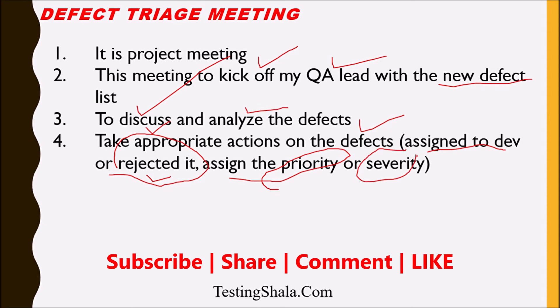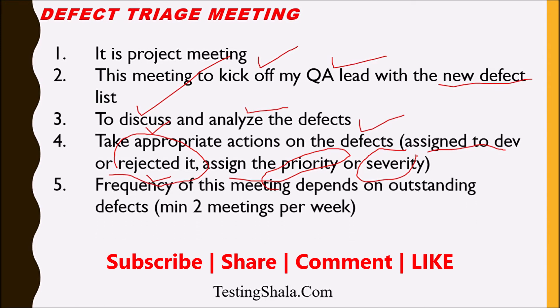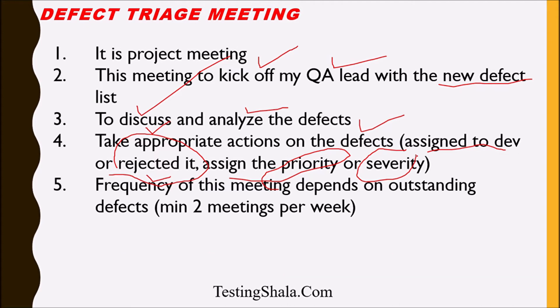The frequency of this meeting depends on the outstanding defects. If you have a large pile of outstanding defects, you would likely have daily or alternate-day triage meetings per week. If you have fewer defects, you can hold this meeting just once a week.